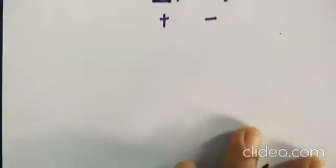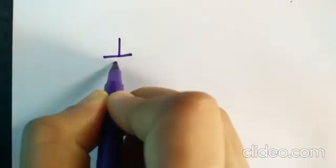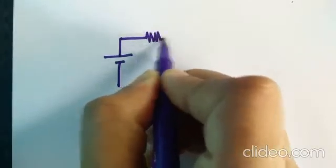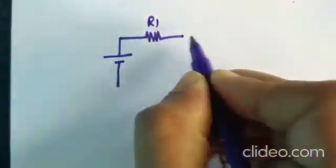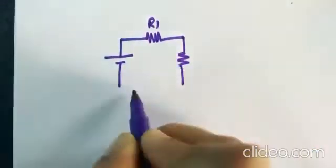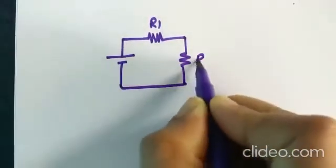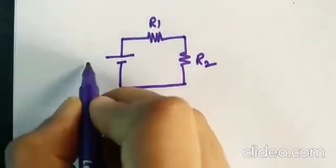So let us have one simple example. This is the simple circuit having one voltage source, this is one resistor R1, some other resistor R2. Some voltage V.